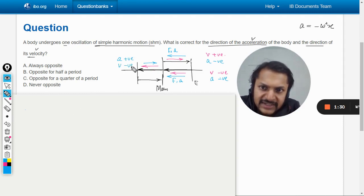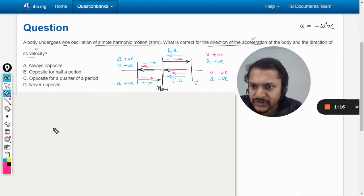And in this last stretch, what is happening? The velocity is towards the mean position but the acceleration is again towards the mean position. So they both are now positive. The acceleration is positive and the velocity is also positive.